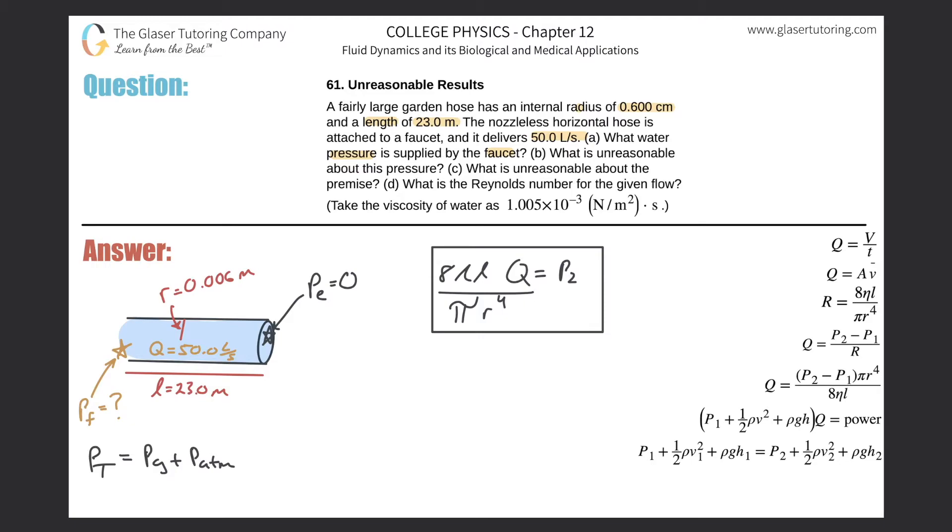And oh, by the way, what's the water temperature? It doesn't tell us what temperature to use, so we have to make an assumption. Let's assume that the water is at 20 degrees Celsius. So we have 8 multiplied by 1.002 times 10 to the minus 3, the length of the tube is 23 meters, the flow rate is going to be 50 divided by 1000 as we said.